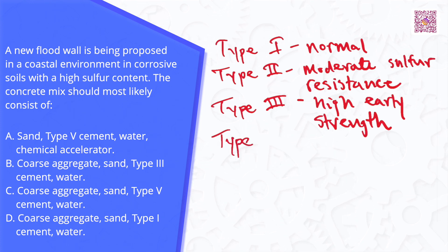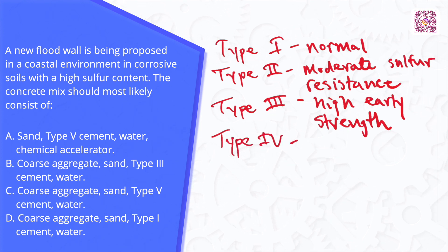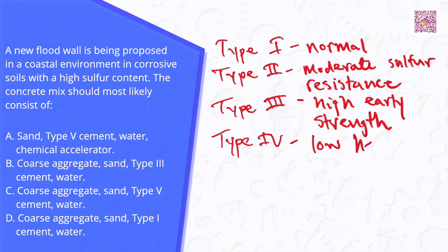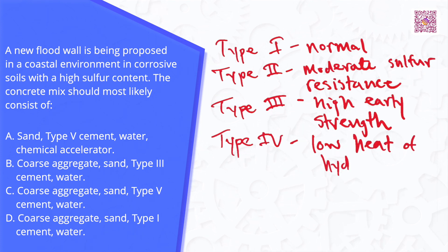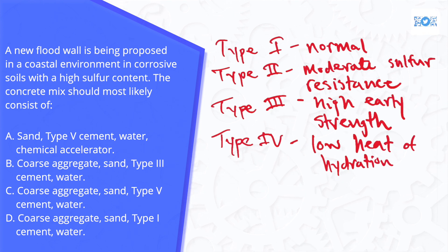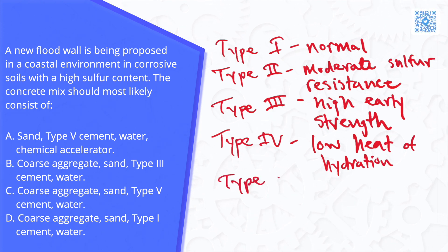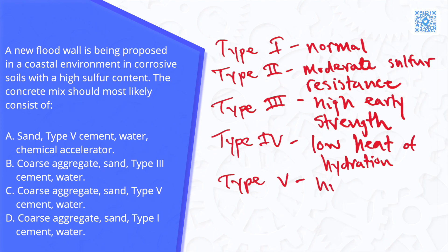Type 4 cement has low heat of hydration, and Type 5 cement has high sulfur resistance.